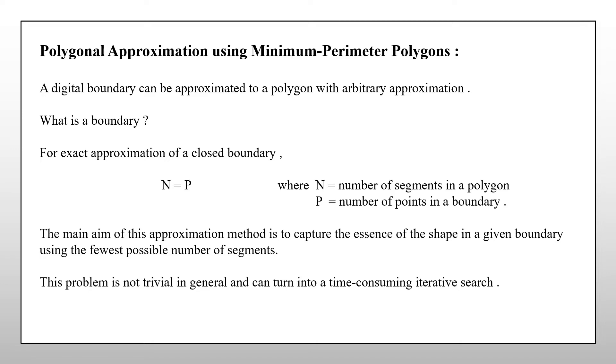For exact approximation of a closed boundary, the number of segments in a polygon should be equal to the number of points in a boundary. A polygonal representation of a digital curve can significantly reduce the amount of data needed to be processed, while at the same time preserving important information about the curve.